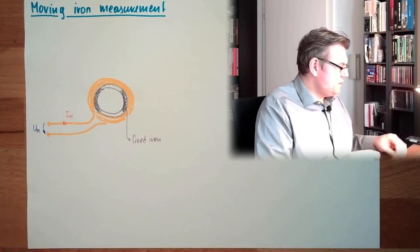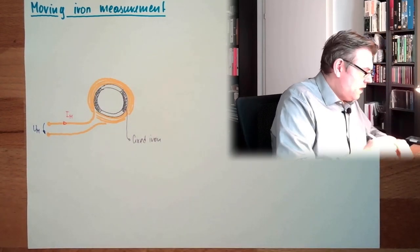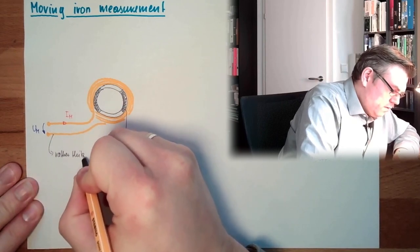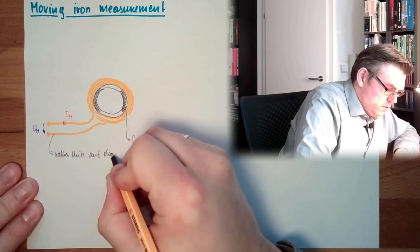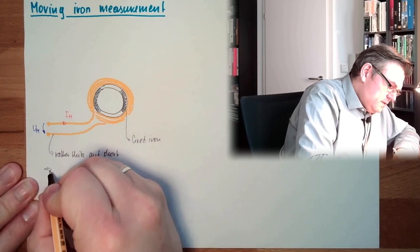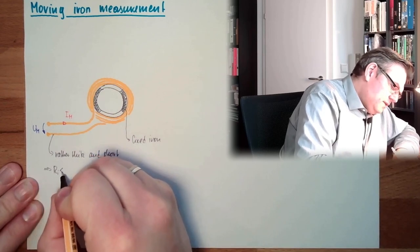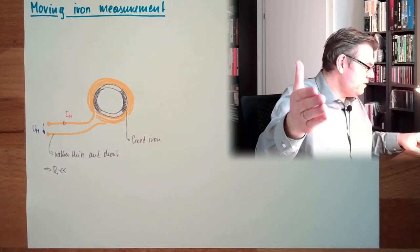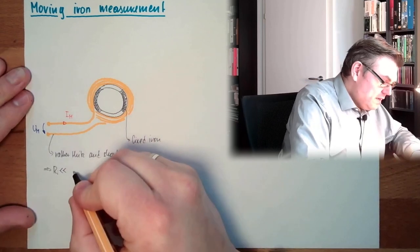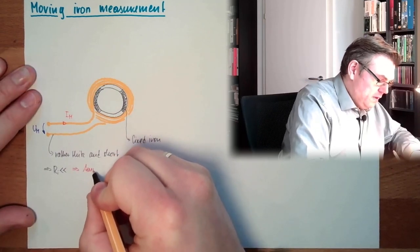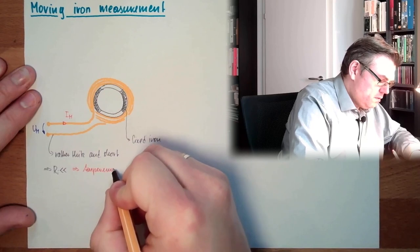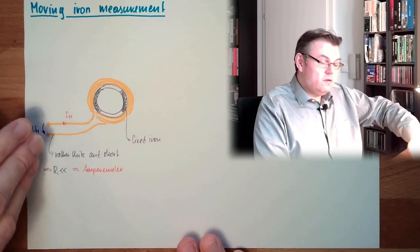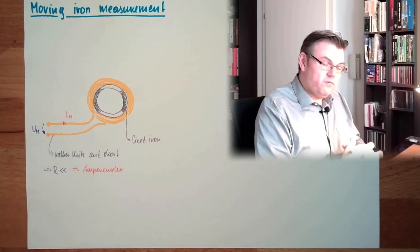Compared to a moving coil measurement system, these wires are rather thick and shorter. So this means the internal resistance of these wires is relatively small. What does it mean if an internal resistance is small? This measurement device is very suitable for an ampere meter. Without extra at the beginning and so on, this is suitable for an ampere meter.